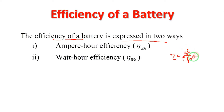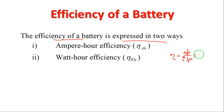For any equipment or machine, efficiency is the output to input ratio multiplied by 100. For example, for a machine with mechanical energy output, efficiency is output power divided by input power, both measured for the machine.